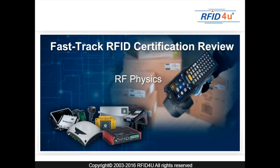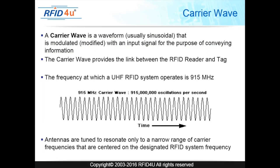The first concept we're going to talk about is called the carrier wave. The carrier wave is the actual RF radial link between the reader and the tag — this is how it connects, how it sends data, how it powers the tag. The carrier wave is a waveform modulated with an input signal for the purpose of conveying information, and it provides the link between the RFID reader and tag.